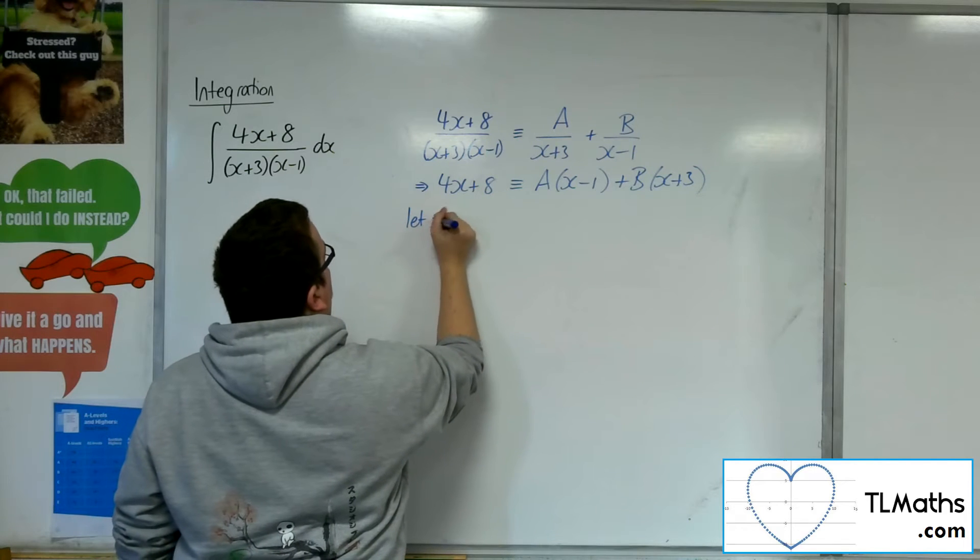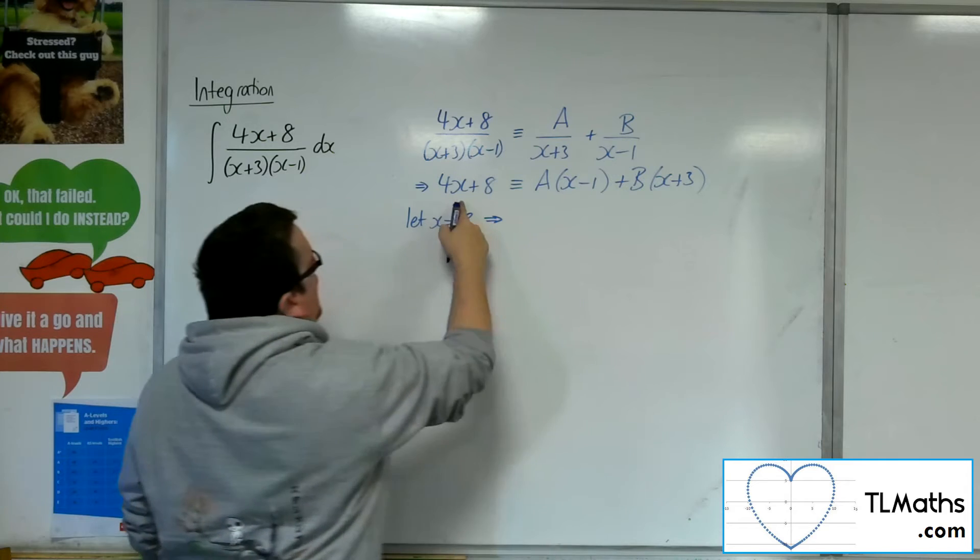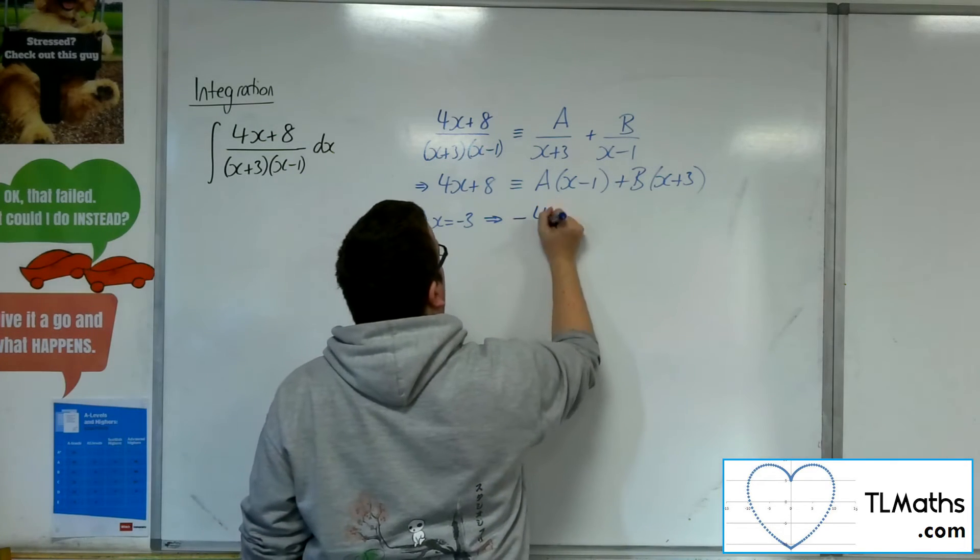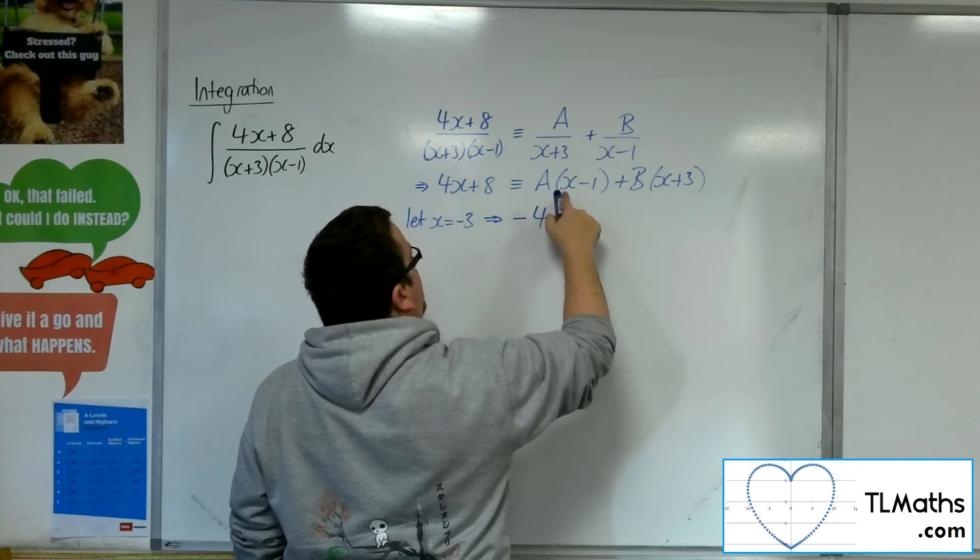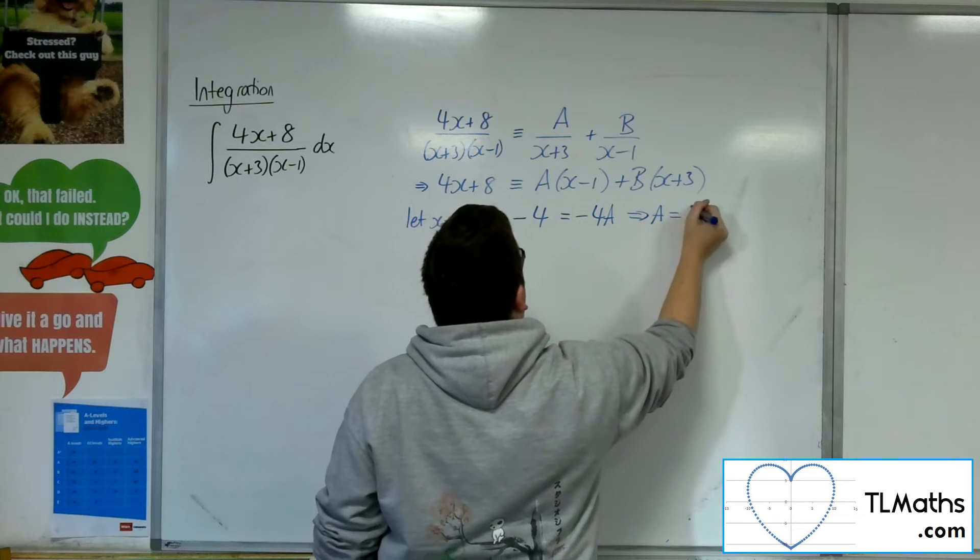So if we let x be minus 3 to start off with, then we're going to get minus 12 plus 8, so minus 4. And we've got minus 3 take away 1, so minus 4, so minus 4A. So A is going to be 1.